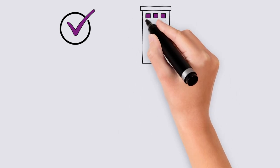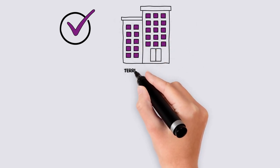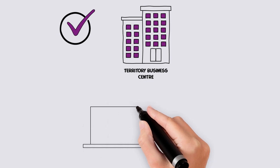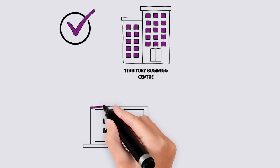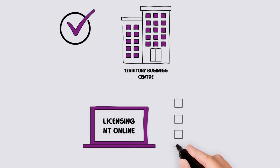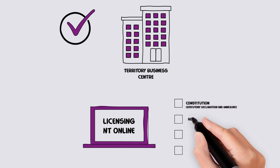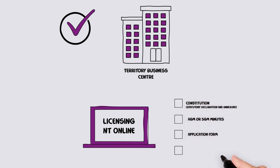Your new constitution can be lodged with the Territory Business Centre or by using the online portal. You will need to provide the constitution, AGM or SGM minutes, an application form and the fee when you lodge.